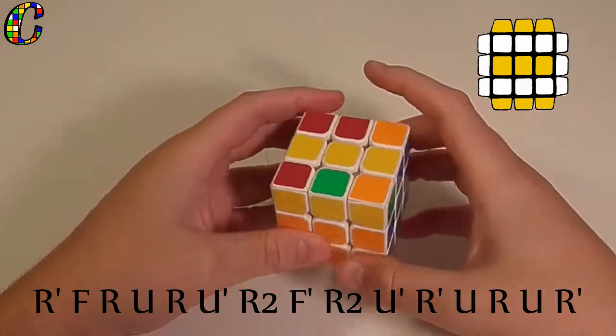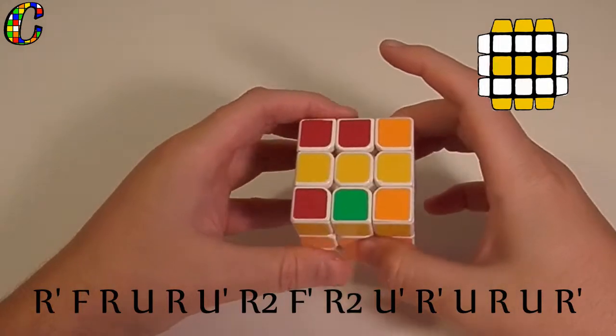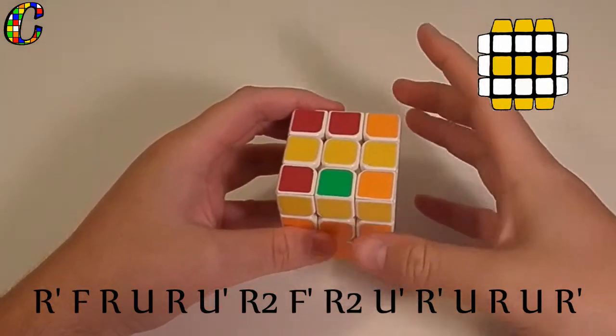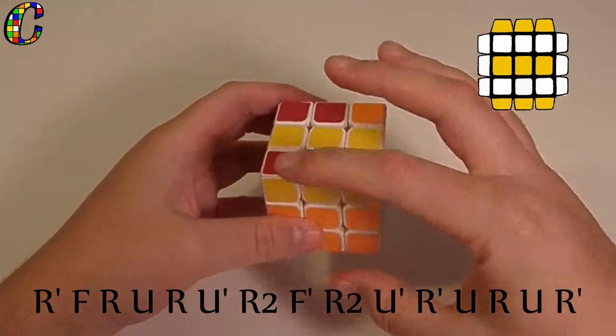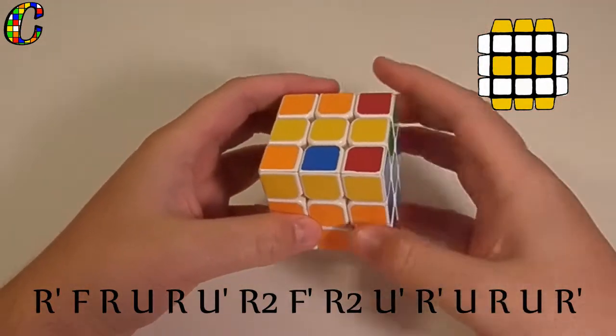Now, that algorithm isn't the most move-efficient version that you can find for this case, but it flows the best, I've come to find out. It's kind of like the T-perm. You really don't have many re-grips in that case. Now, let me show you how I perform this algorithm.